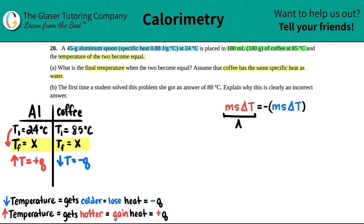Now let's put in our numbers. I'm going to put in everything I know for the aluminum on the red side and everything I know for the coffee on the blue side. M stands for mass—they told us that the aluminum was 45 grams, so this is 45. S is the specific heat, and they told us that the specific heat of aluminum was 0.88 joules per gram degrees Celsius.